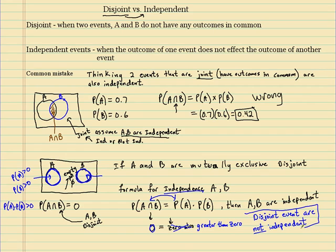Therefore, disjoint events are not independent. Sometimes, if you try to think about this logically, you'll think they are independent — because when they're not connected, you say A is not connected to B, so they must not affect each other. But that's not true. Disjoint events are not independent.